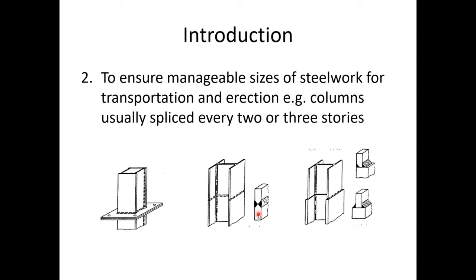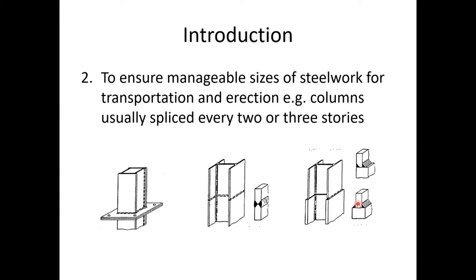If the weld is done well, the assumption is that it is at least as strong as the column it connects. When changing column size — larger below, smaller above — the flange step allows a fillet weld along the edge on both sides. You can also have a partial penetration weld on the other side. If the top column is placed centrally, a fillet weld can be applied on both sides.